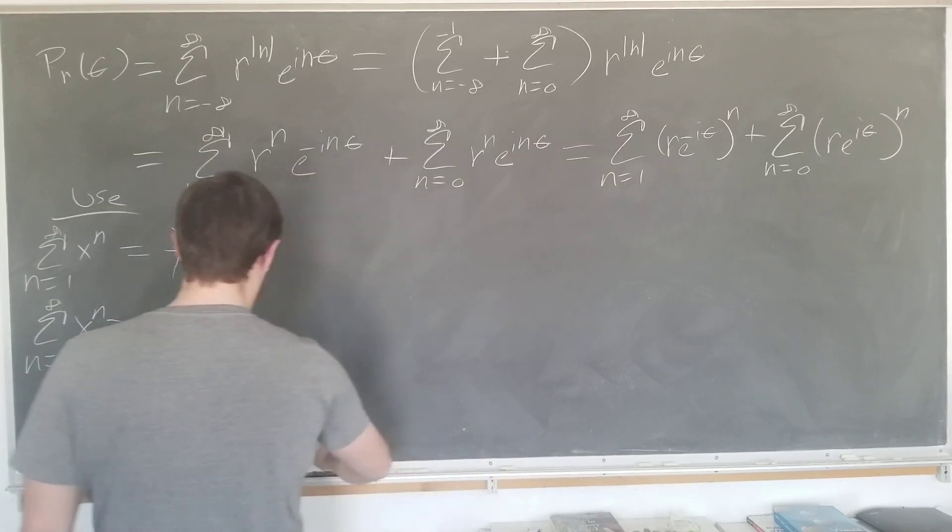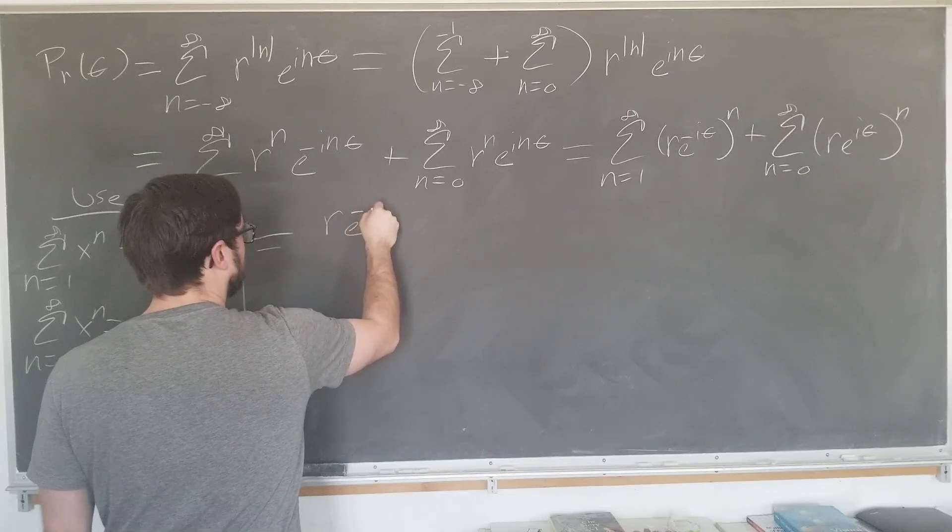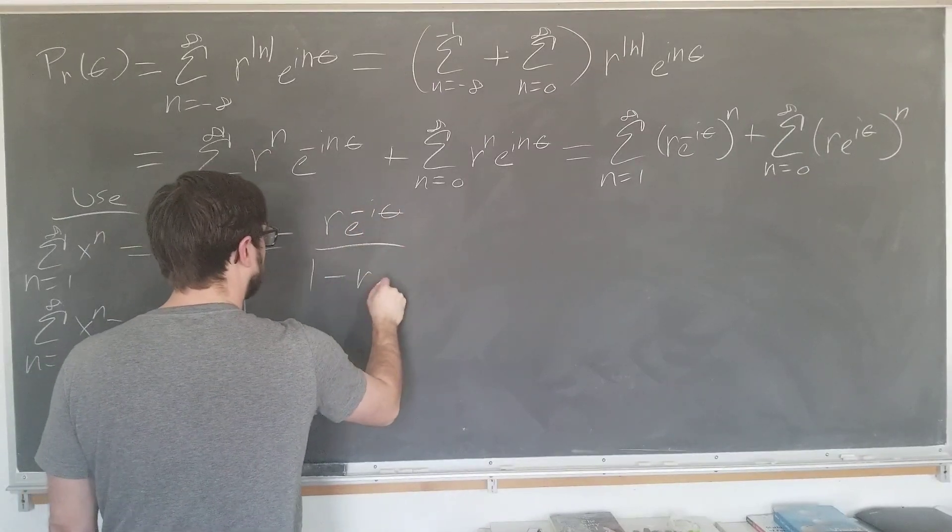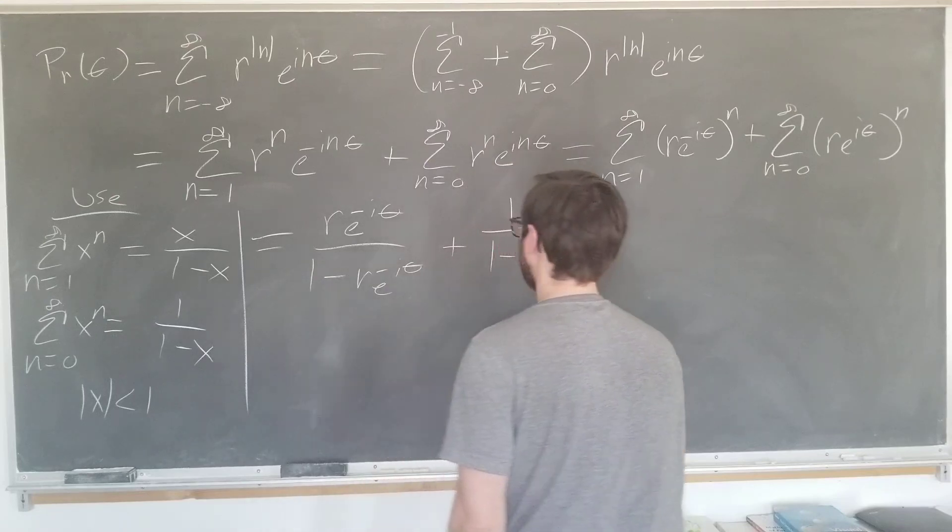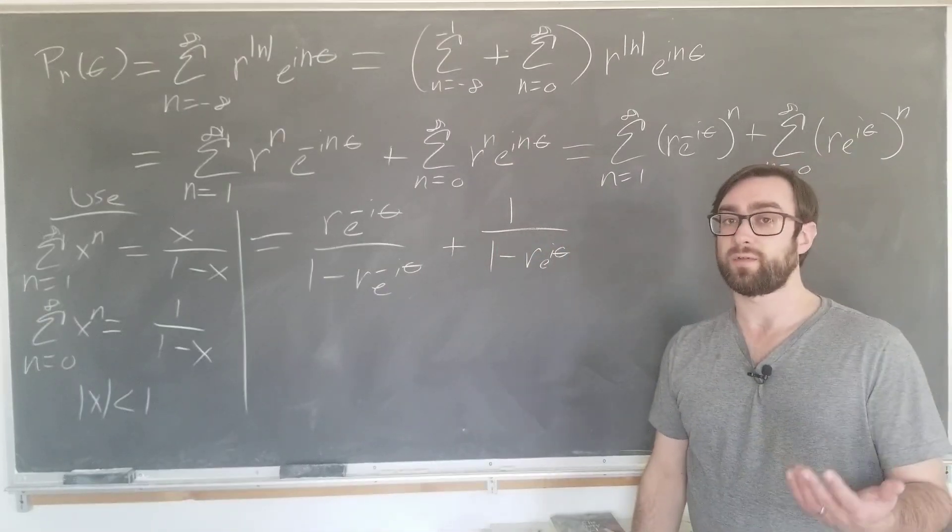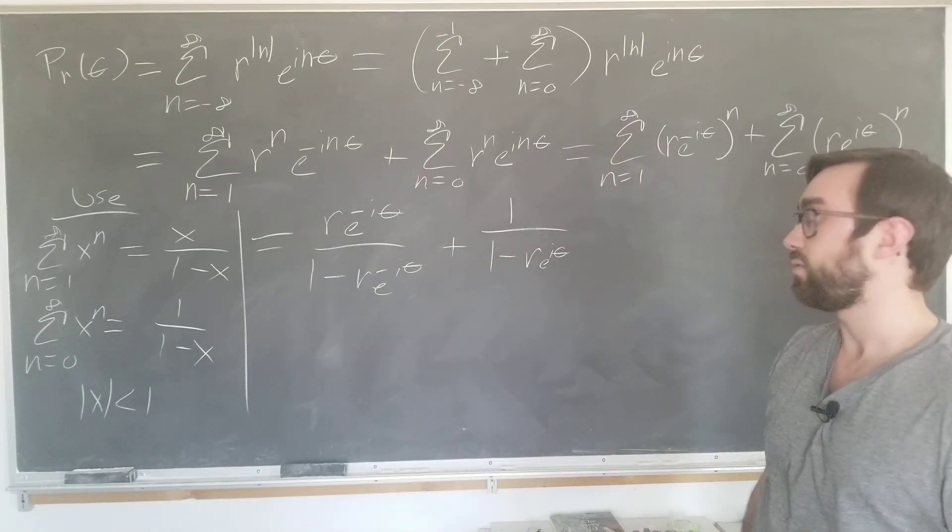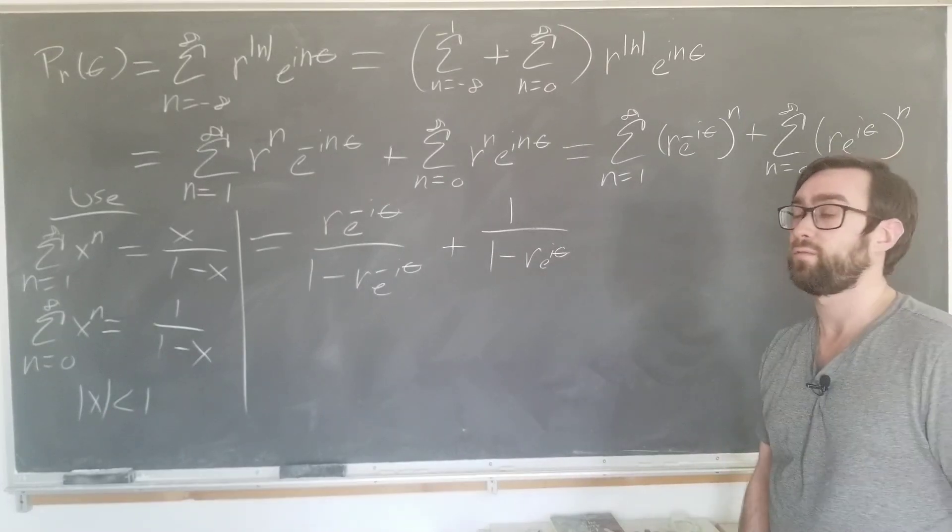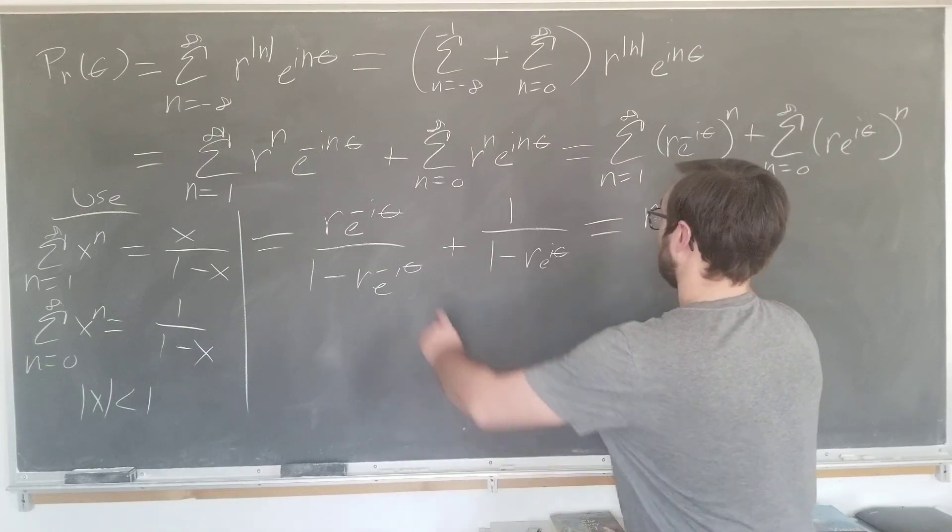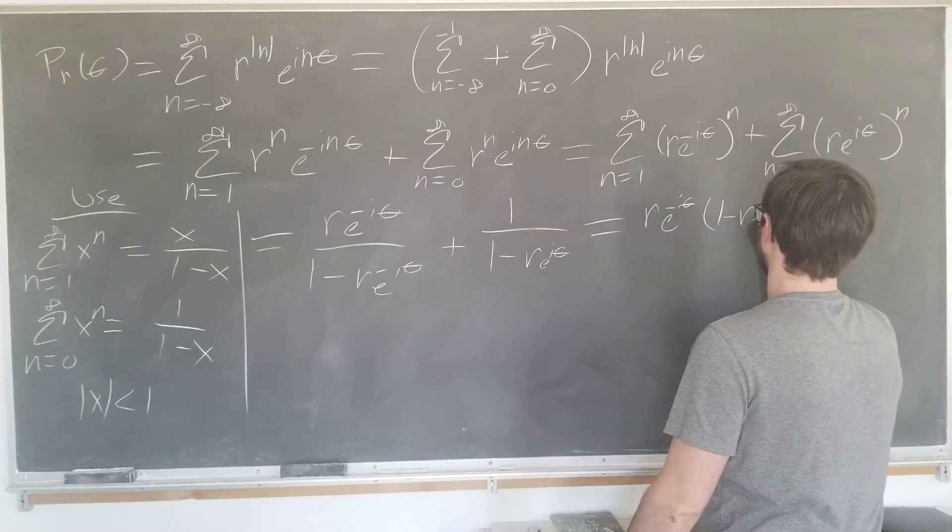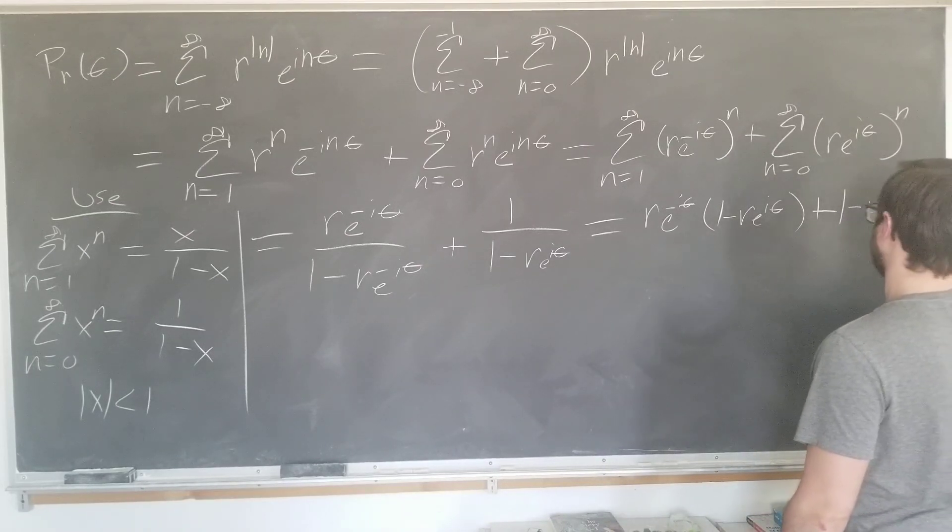All right, let's evaluate these series now. The first one is just going to be r e to the minus i theta over 1 minus r e to the minus i theta. The second series is just going to be 1 over 1 minus r e to the i theta. And now we can do the usual trick when dealing with complex numbers and multiply top and bottom by the conjugate of each. Or rather, in this case, we're just going to put them over a common denominator, and it'll result in a similar cancellation. So the first one times this denominator, and plus 1 times the second denominator over their product.